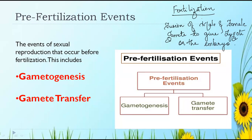What happens in sexual reproduction? There is a fusion — the involvement of both male and female gametes. Fusion means the meeting of male and female gametes to give zygote or embryo, which is known as fertilization. So, fertilization is the fusion of male and female gametes to give a zygote or embryo.